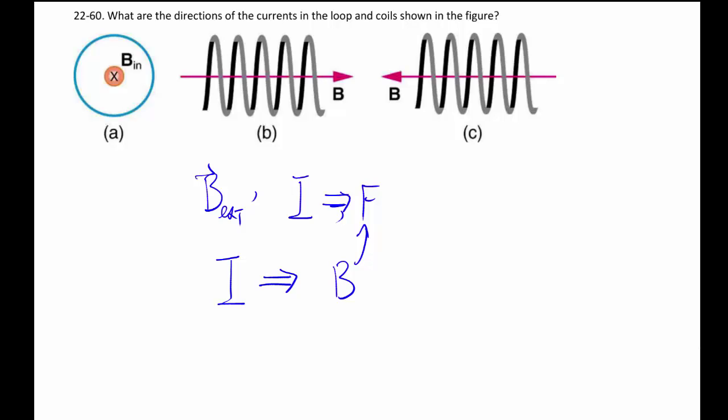It's like the current kind of becomes a magnet, which then attracts or repels. Now to work out the specific direction of the magnetic field around a wire, I give you the second right hand rule.